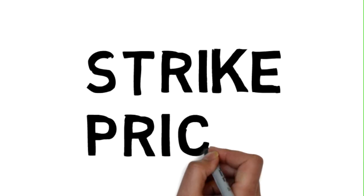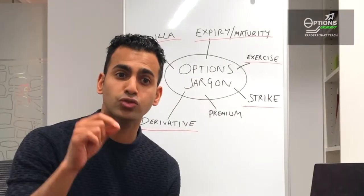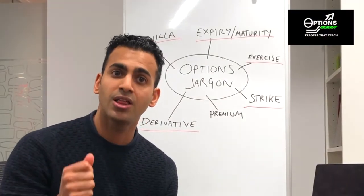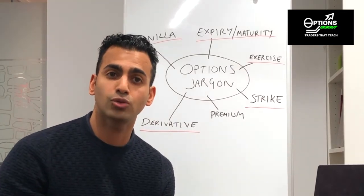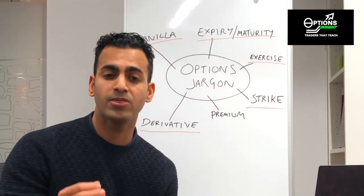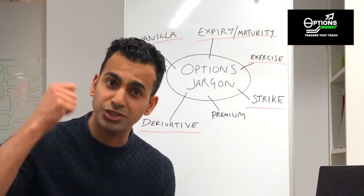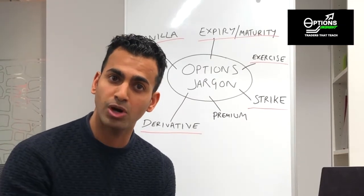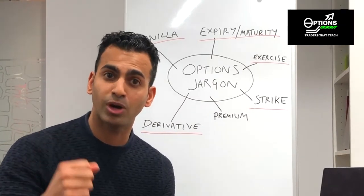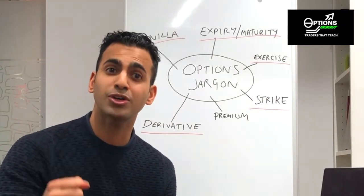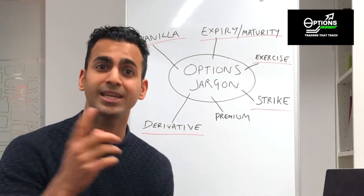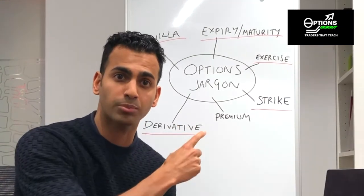Strike price — what do we mean by strike price? That's actually the transaction price. If you do choose to exercise your option, that is the price you will transact at. So if I have a call option, which is the option to buy, and I exercise my option to buy, the price that I buy my underlying asset at is the strike price.